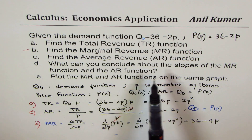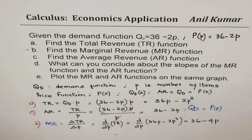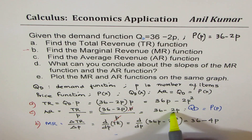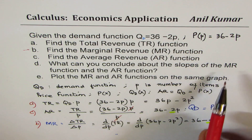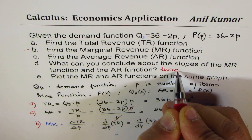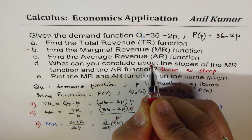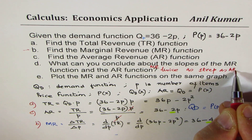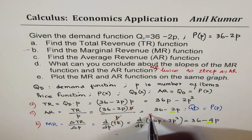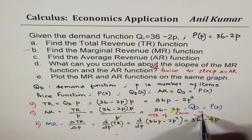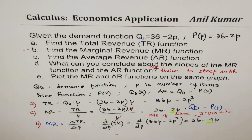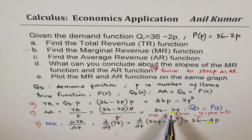Part D: what can you conclude about the slopes of MR and AR? Average revenue is 36 minus 2p — slope is minus 2. Marginal revenue is 36 minus 4p — slope is minus 4. So marginal revenue is twice as steep as average revenue. Both are equations of lines in the form y = mx + b, and the slope of MR equals 2 times the slope of AR.